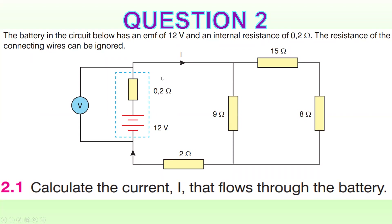Calculate the current — they are asking you to calculate the current. What is given? Let's see: EMF is 12 volts, it is given here. Internal resistance is 0.2 ohms, and resistance of the conducting wires can be ignored. That's our question. Let's look at what they ask and what method we can use.